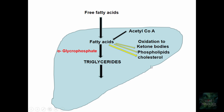These triglycerides, with the help of apoprotein, are converted to lipoprotein, which is then excreted out of the liver. The key steps are: entry of fatty acids; synthesis of fatty acids by acetyl-CoA; esterification of fatty acids; oxidation of fatty acids to ketone bodies; and, with the help of apoprotein, formation of lipoproteins and their release outside the liver.